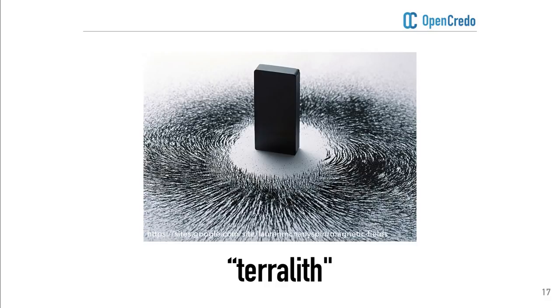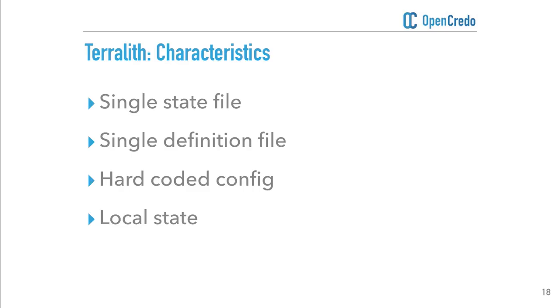One of the typical reasons you see this Terralith pattern emerging with clients is because they take a proof of concept setup and evolve it quite quickly into production without necessarily thinking about splitting things up. It happens more often than you think. The characteristics of a Terralith setup are that you have a single state file which rules everything — your test and your production infrastructure — typically with all definitions in one place, some hard-coded config, and management in local state.